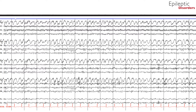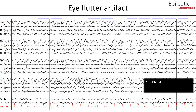In this bipolar montage, we will look at eye flutter artifact. Note the rhythmic 2 to 3 Hz oscillations with restricted field in FP1 and FP2, fitting the distribution of eye movements on EEG. Additionally, note the 8 Hz PDR suggesting wakefulness in this patient, outlined by the red circle and star. Another important way to confirm this artifact is by taking a look at the video and looking for eye fluttering movements on the patient.